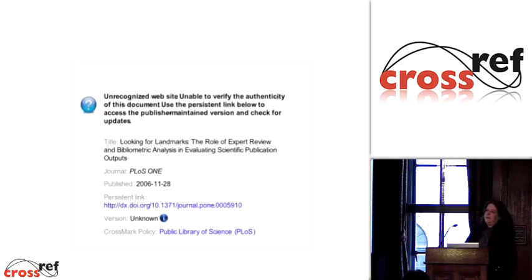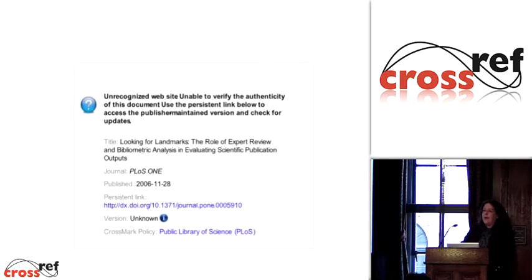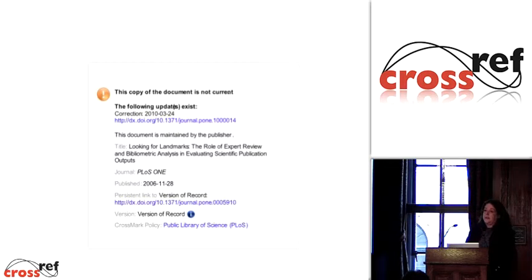Here's another example: people found that the big ugly warning message we had for the unauthorized website was legalese and not easy to read. Some people didn't know what the problem was — we didn't actually tell people why they were getting the warning. So one recommendation from the usability study was to tell people 'we don't know about this website,' and another is to say 'we know this copy of the document is not current — click on this DOI and you'll get the current document.'